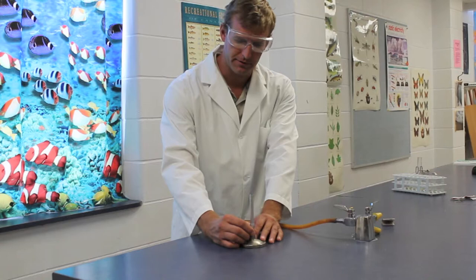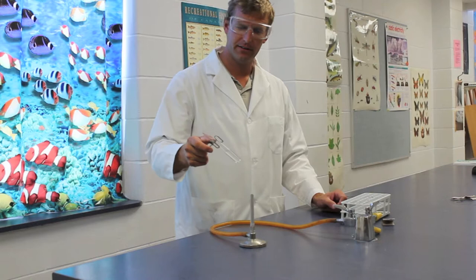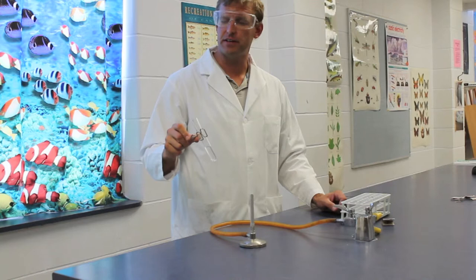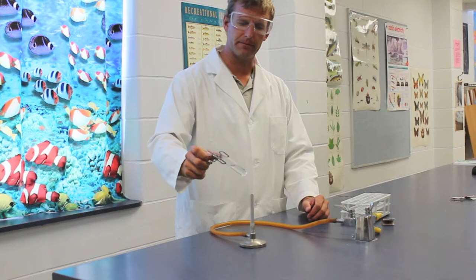Now finally, when actually using the Bunsen burner to heat a liquid, and I just have a test tube full of water here, always hold your test tube at an angle pointed away from people in case there's any sudden heating that creates an explosion of water or the water to spray out the end. And heat that test tube evenly over the flame. Remember that the flame is going to be hottest at the tip.